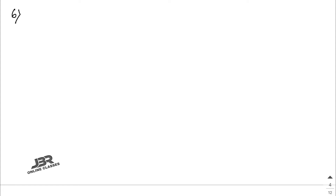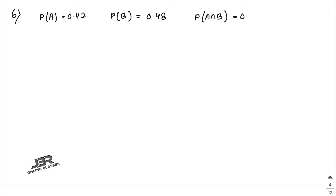Here A and B are events such that P(A) = 0.42, P(B) = 0.48, and P(A ∩ B) = 0.16. Determine P(not A). Not A means complement, so P(A complement) = 1 minus P(A), so 1 minus 0.42 equals 0.58.